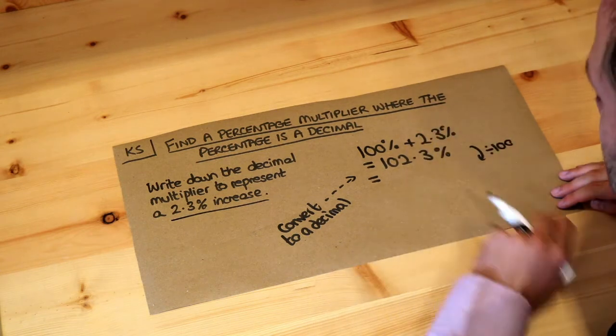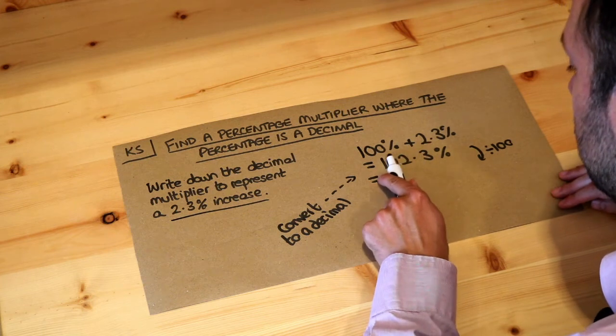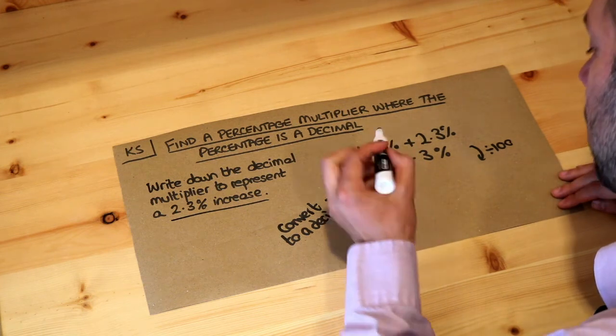When we divide this percentage by 100, the decimal point moves two places to the left, so we get 1.023.